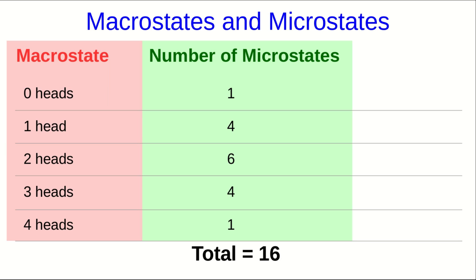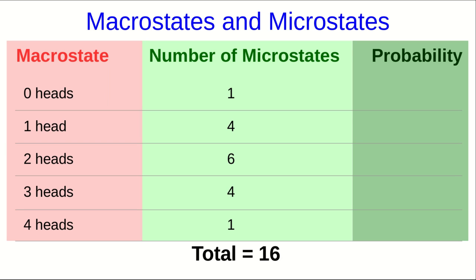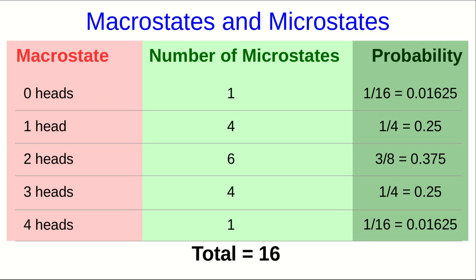And we can now calculate the probability of each of these microstates. This is the probability of getting these outcomes if you flip four coins simultaneously.